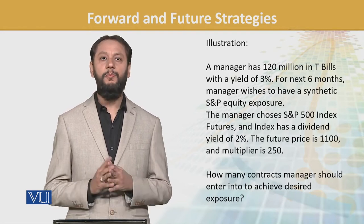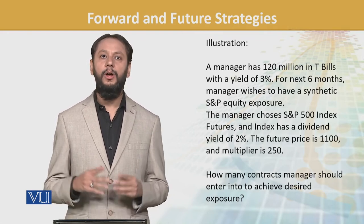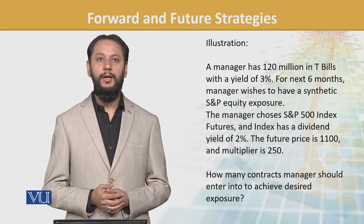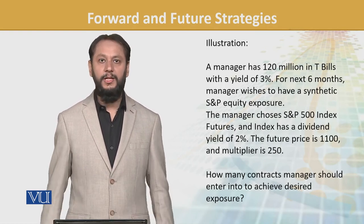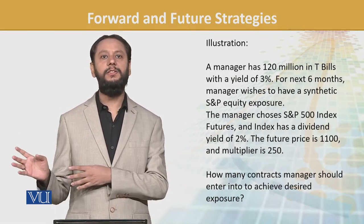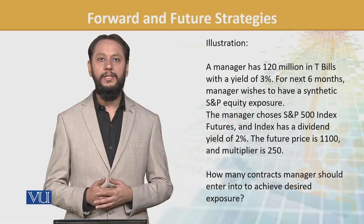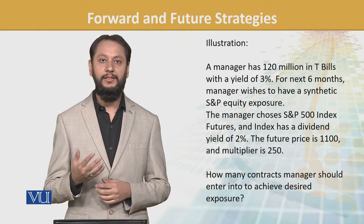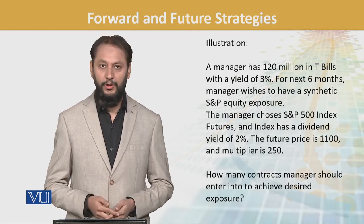The question now is: for this portfolio amount, if we want to go synthetic index, how many contracts should we enter? We've seen the formula — now we look at its practical implication. The money is sitting in T-bills, we want the index return. So we create a synthetic index by keeping the T-bills and buying futures on the index. The key question: how many contracts?